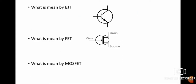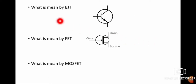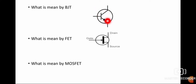Let us start with the first slide that contains information about BJT and FET. BJT is a bipolar junction transistor. This is the symbol of BJT, which has three terminals: emitter, base, and collector. The arrowhead terminal is emitter, the middle one is base, and the last one is collector.